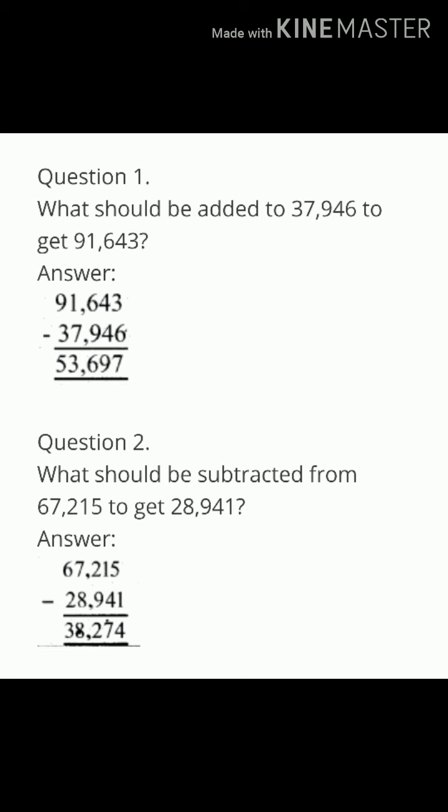Second one: what should be subtracted from 67,215 to get 28,941? So, here the solution is 67,215 minus 28,941, then we get the answer 38,274.